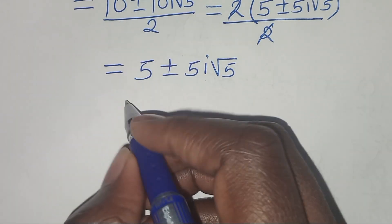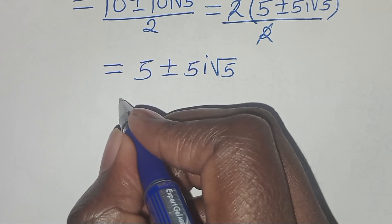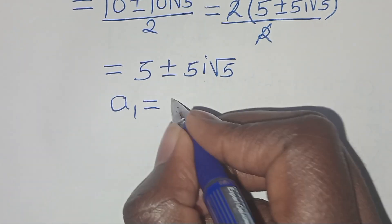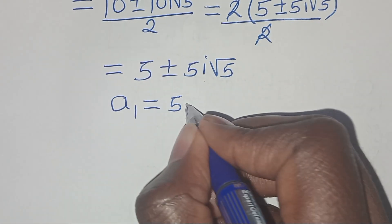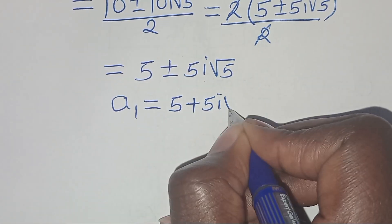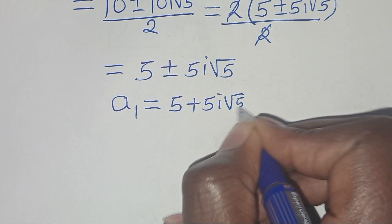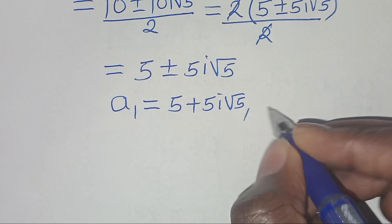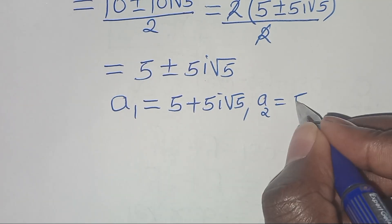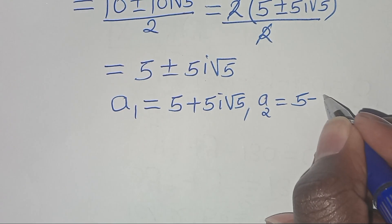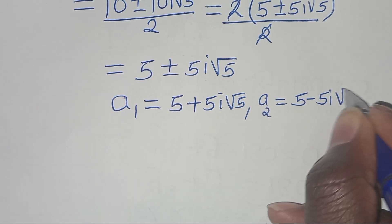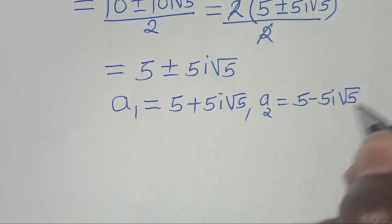This implies that A1 equals 5 plus 5i square root of 5, and A2 equals 5 minus 5i square root of 5.